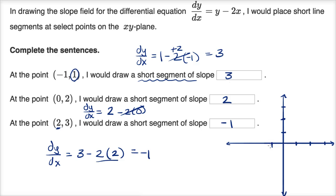This exercise isn't asking us to do it, but I'm making it clear how we would construct the slope field. At the point negative one comma one, a short segment of slope three would look something like that. At the point zero comma two, the slope is two — it looks something like that. And at the point two comma three, a short segment of slope negative one would look something like that. You would keep doing this at more and more points — a computer would do exactly this — drawing short line segments to indicate what the derivative is at those points, and you get a sense of the solution space for that differential equation.